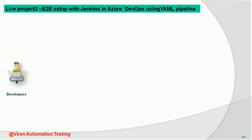Hello guys, welcome back. In this video session we are going to discuss about our live project 2, which we are going to set up with Jenkins in Azure DevOps using YAML CI/CD pipelines. This project will help us understand how we can integrate Jenkins in Azure DevOps and how the Azure DevOps pipeline will trigger Jenkins automatically to deploy the WAR file into the Tomcat server.